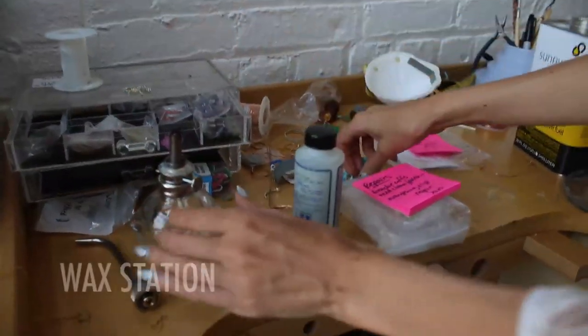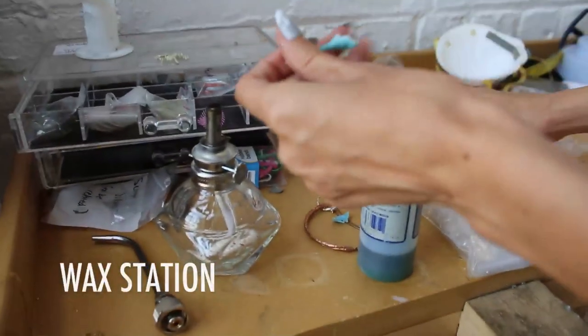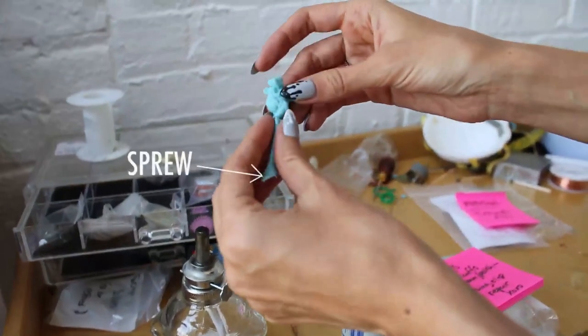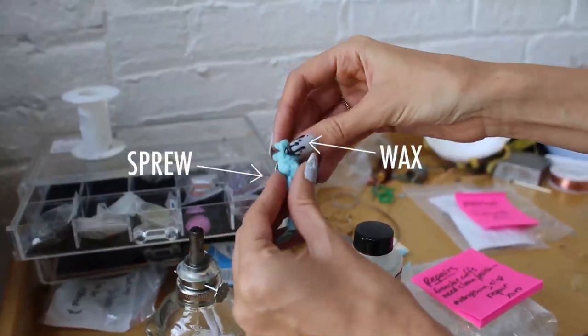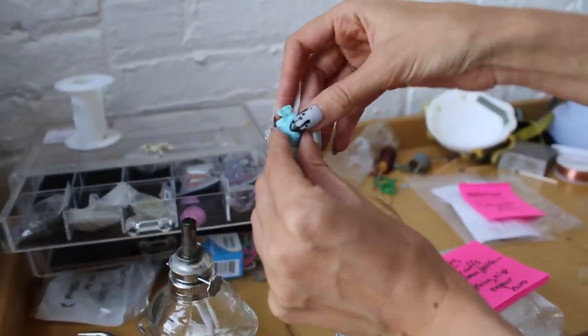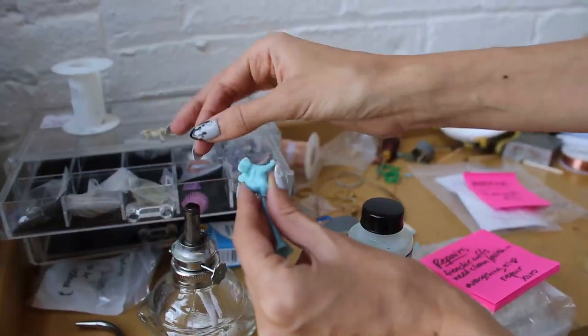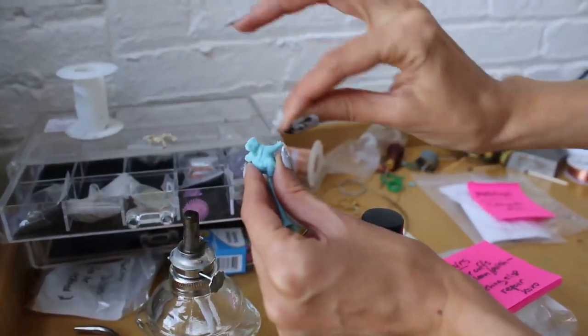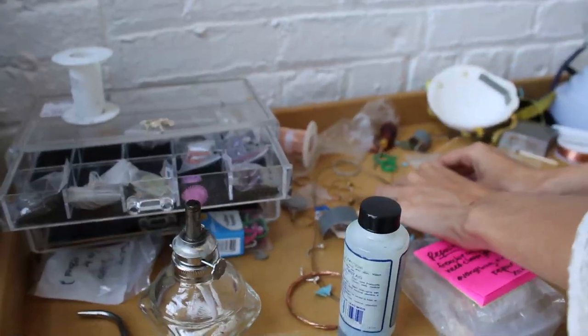This is the wax station where your sprue is going to be connected to your wax and you carve little details. This alcohol lamp helps you heat up your tools so you can carve more easily. And these are your tools for your flex shaft.